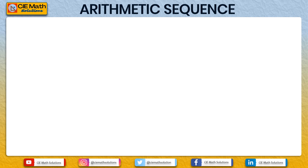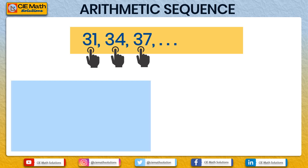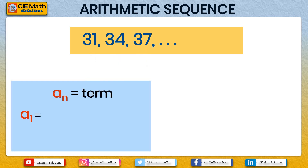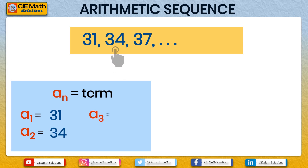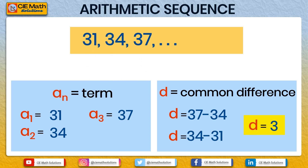But before we proceed, let us recall the basic concepts of arithmetic sequence or progression. Consider the sequence 31, 34, and 37. These are called the terms of the sequence, denoted as an. Here, a1 is the first term equal to 31, a2 is the second term which is 34, and a3 is the third term which is 37. An arithmetic sequence also has a common difference denoted by d, found by subtracting two consecutive terms. So d = 37 − 34 = 34 − 31 = 3.